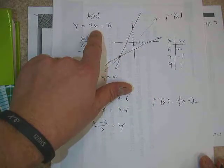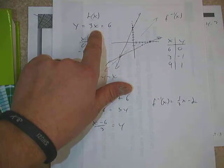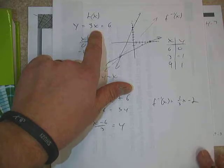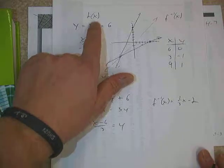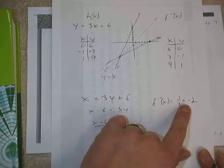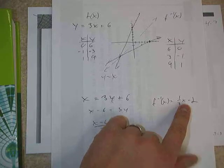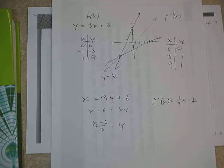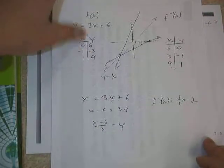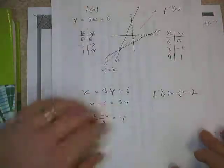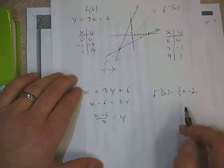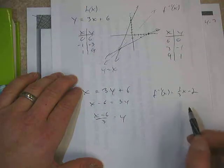We also learned how to prove that by composing them both ways. We could take the inverse function and plug it into the f function, and if we do that, we would get x, as long as they're inverses. Then the other way, we'd take the f function, put it into the inverse, and we'd also get x. That's the way that we proved these two functions were inverses of each other.